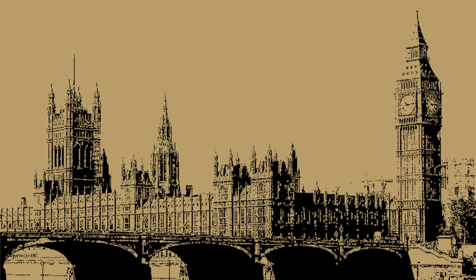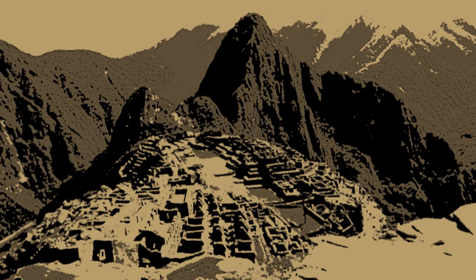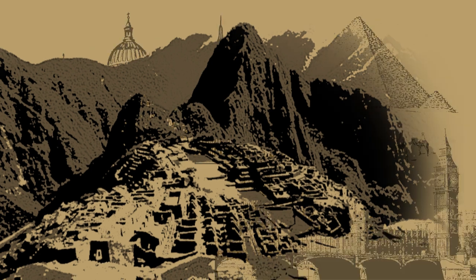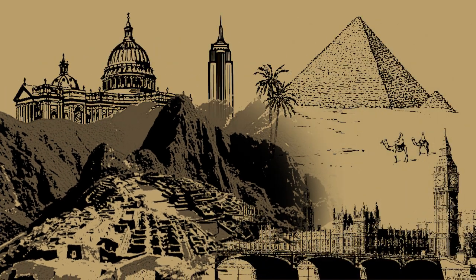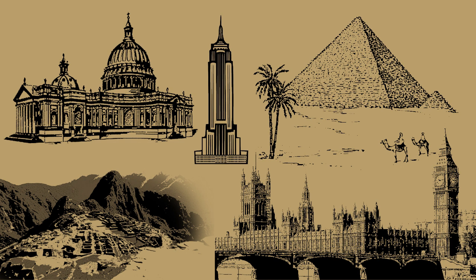If we go further back in time, the external structure of the Great Pyramid of Giza in Egypt is made of limestone, as are the walls of Machu Picchu in Peru. This goes to show that the usage of limestone as a building material is not a recent innovation.